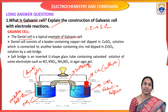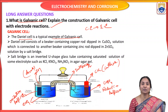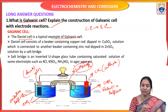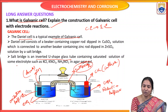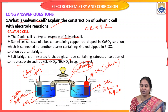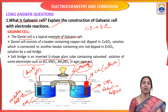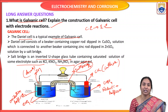These two half cells — the oxidation half cell and the reduction half cell — are connected by a salt bridge. The salt bridge is an inverted U-shaped glass tube containing a saturated solution of some electrolyte such as KCl, KNO₃, or ammonium nitrate in agar-agar gel. Its main use is to connect the two half cells and maintain electrical neutrality in the cell.